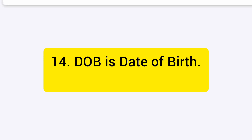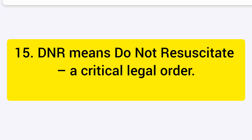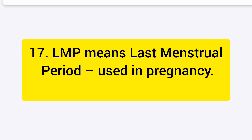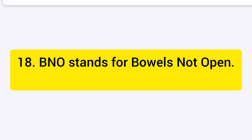DOB is date of birth. DNR means do not resuscitate — it is a critical legal order. CBC is complete blood count. LMP means last menstrual period — it is used in pregnancy. BNO stands for bowels not open.